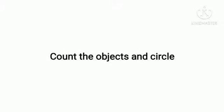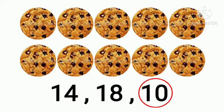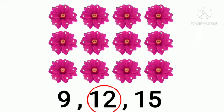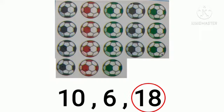Yes, now next question: count the objects and circle the correct number. There are 10 cookies. 12 flowers — count the flowers and circle the number 12. 15 glasses — count the glasses, how many are there? 15, circle the number. 18 balls — count the balls and circle number 18.